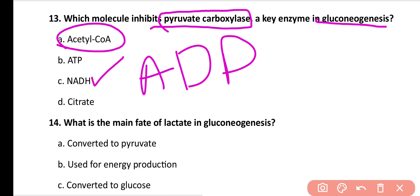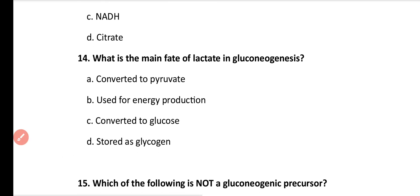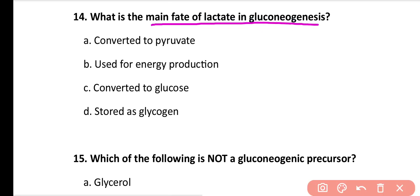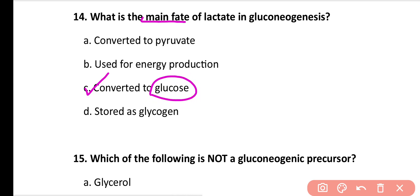Question number 14: What is the main fate of lactate in gluconeogenesis? Options: converted to pyruvate, used for energy production, converted to glucose, stored as glycogen. Correct answer is option C. The main fate of lactate is to be converted to glucose, but in the first step it is converted to pyruvate.